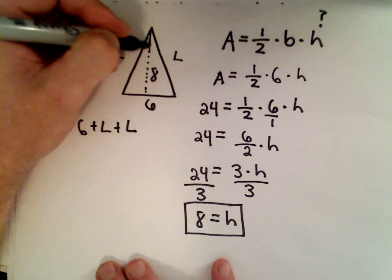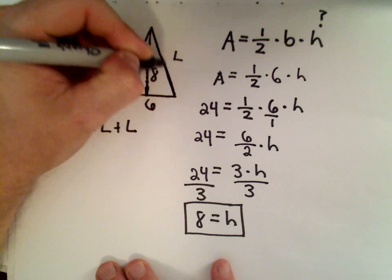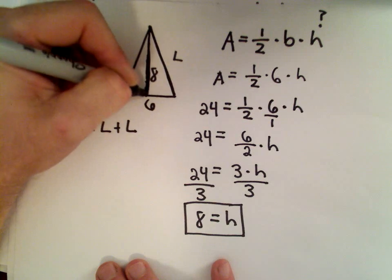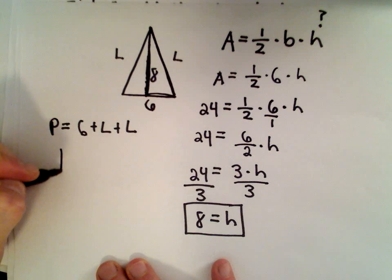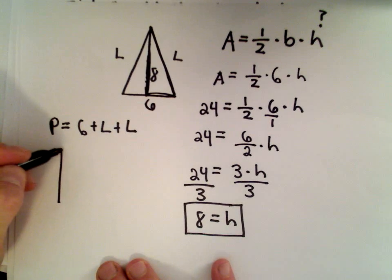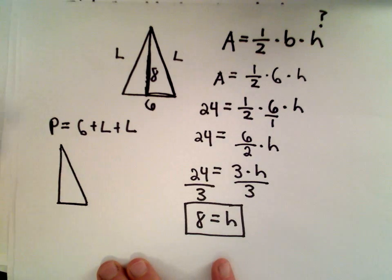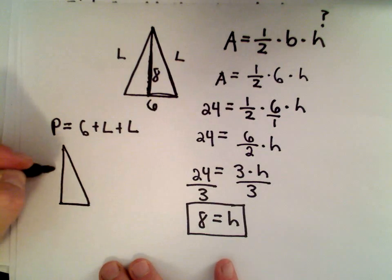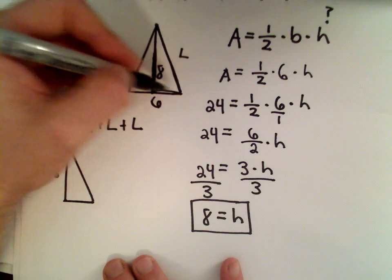So notice if I drop this line right down the middle, I make two triangles. I've got this triangle on the right and the triangle on the left. So I'm just going to imagine this triangle on the right side. Again, we know that it has a height of 8. That's what we just figured out.